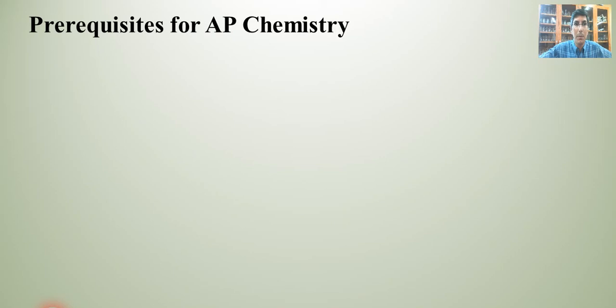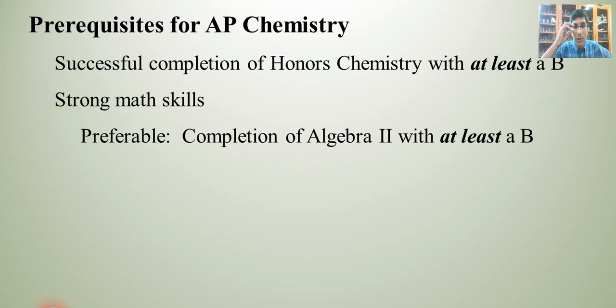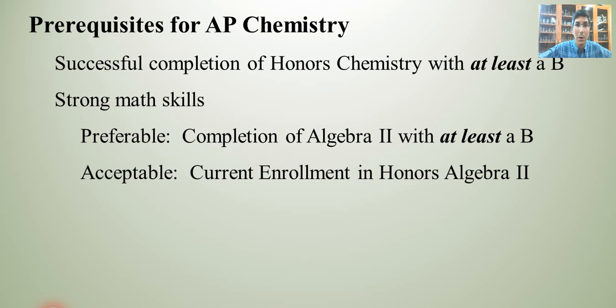Now in order to be in AP Chemistry, generally speaking, there are some prerequisites. Normally, you need to have completed a first year honors chemistry course with at least a B. That's generally what's required. Also, you need to be good at math. There's a lot of math in chemistry. And in order to succeed, you've got to be able to do some algebra. Generally speaking, it means that you've completed algebra 2 with at least a B. Although if you're currently enrolled in algebra 2, you can probably get away with being in this class as long as you're a pretty strong math student.